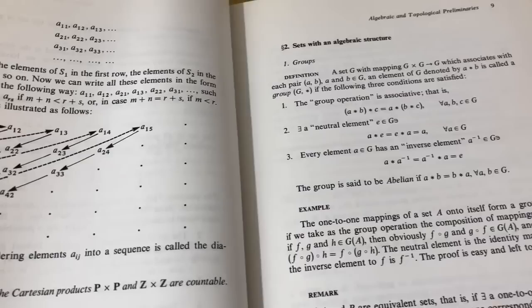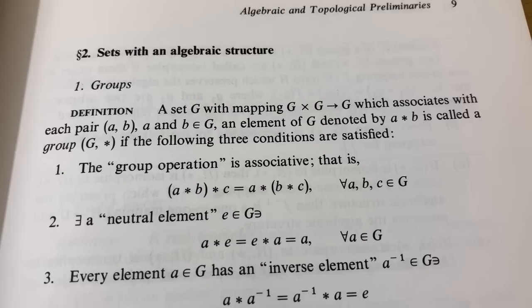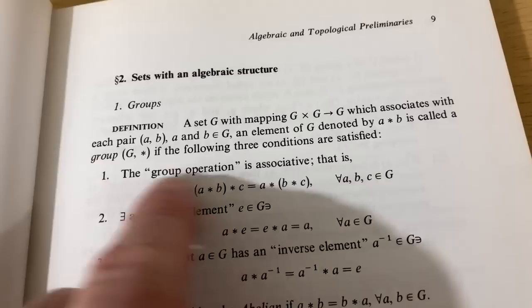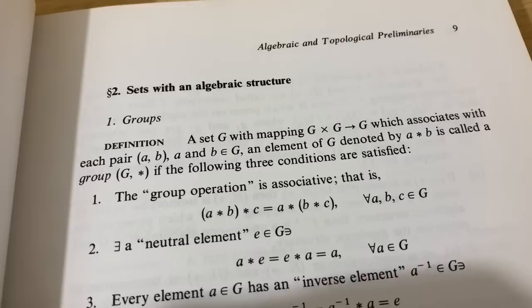Let's look at this. Sets with an algebraic structure. Groups. A set G with mapping G cross G into G, which is associated with each pair (a, b), a and b in G. An element of G denoted by a star b is called a group. So basically this is just saying you have a binary operation. So like plus addition is a binary operation because like two and three, if you add them up, you also get a number. So if you take two numbers and you add them up, you get a number. So addition is a binary operation on the set of numbers. Let's just say for all practical purposes, the real numbers.